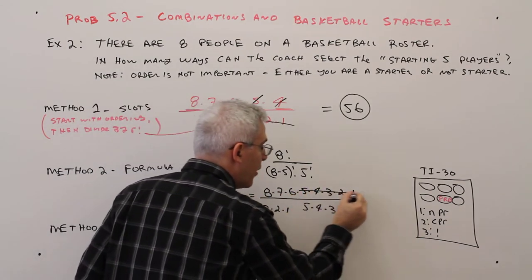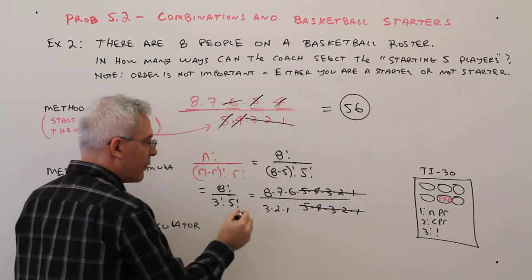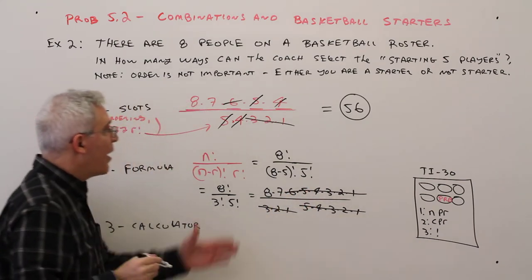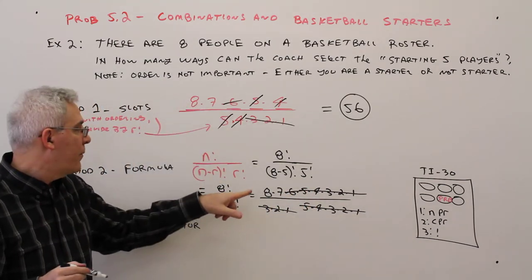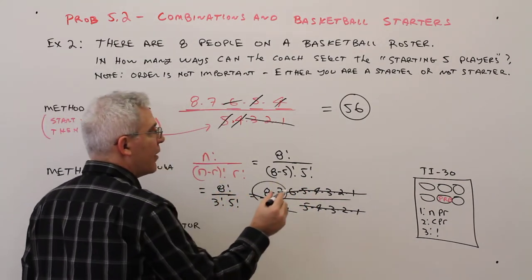So I can cancel all of those with all of those, that with that, and that's no different than what we did before. I'm left with 8 times 7 equals 56.